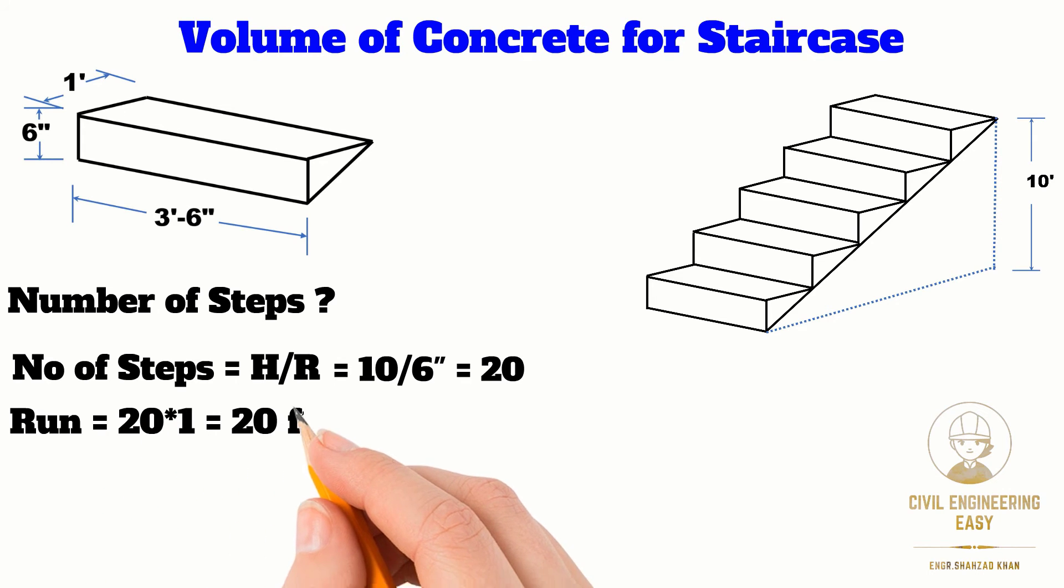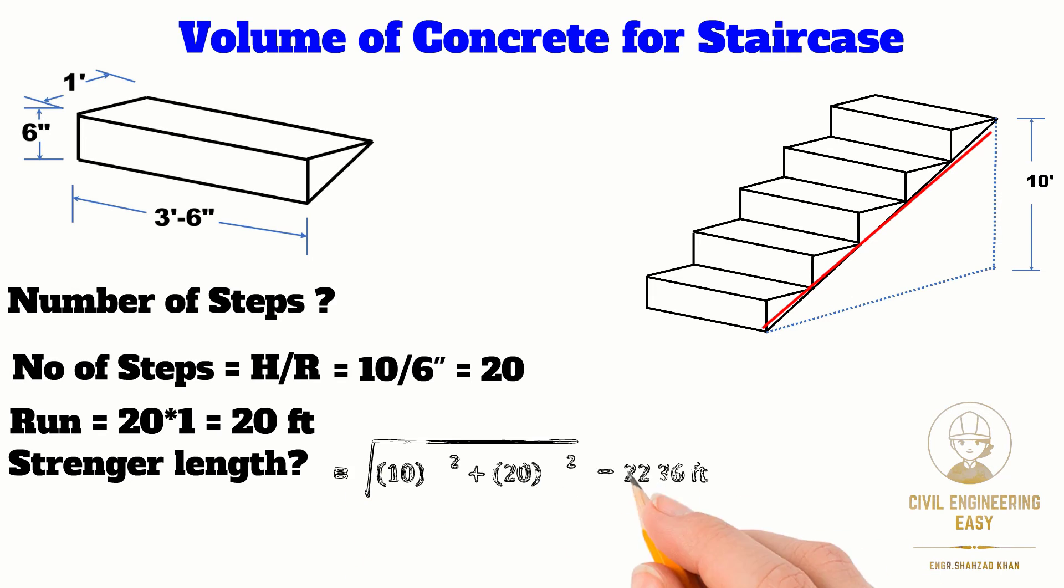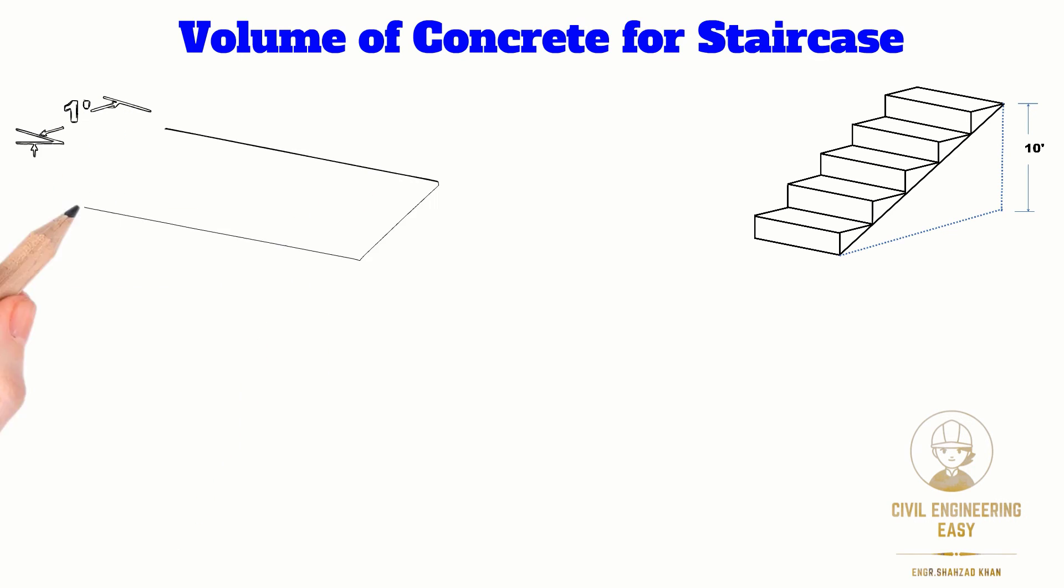Next, we will find the stringer length using the Pythagorean theorem. The stringer length equals the square root of 10 squared plus 20 squared. By calculation, we get the stringer length equals 22.36 feet.